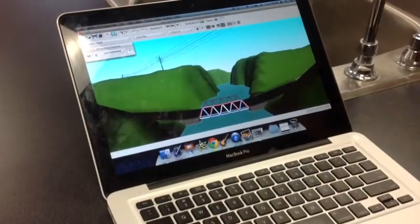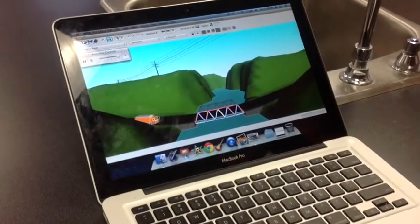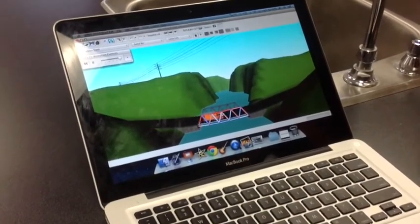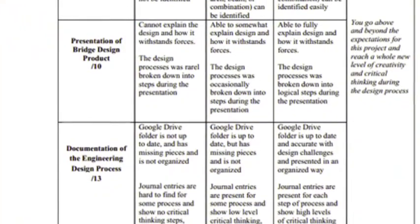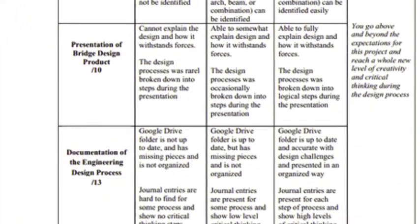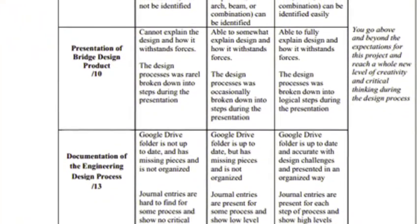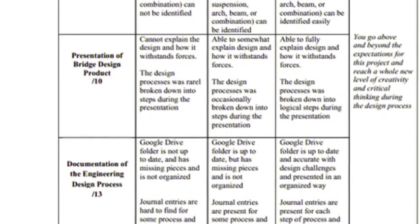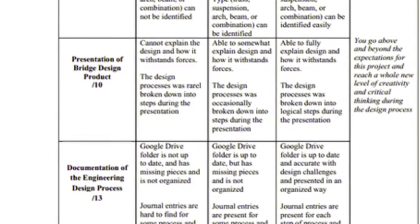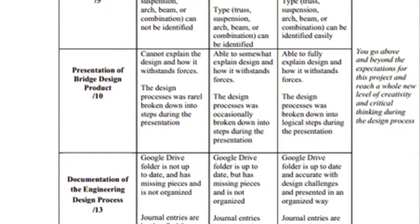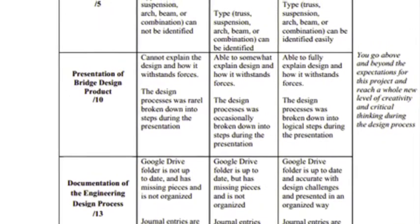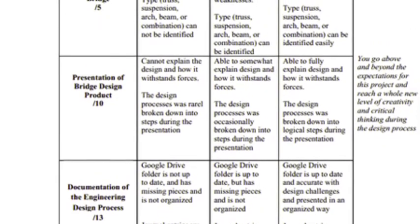How we get marked on this project is we show our classmates how much tension and compression is in our bridge. On top of student presentations, they are also assessed on the virtual model of the bridge they create, their presentations and how they explain themselves during their design, and the documentation of their engineering design process in their science reflective journals.